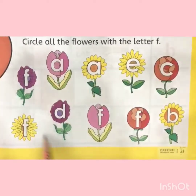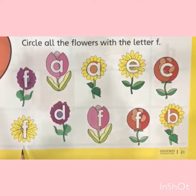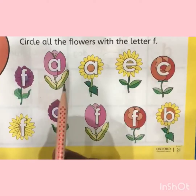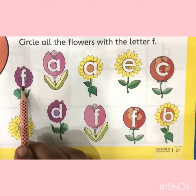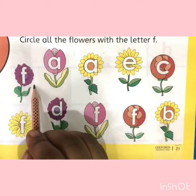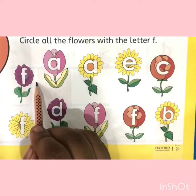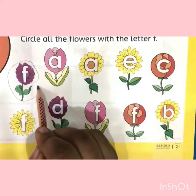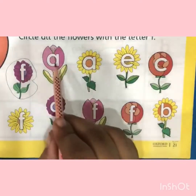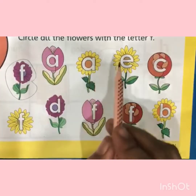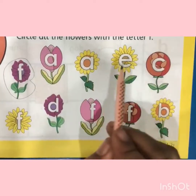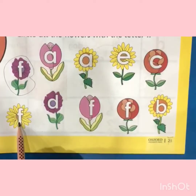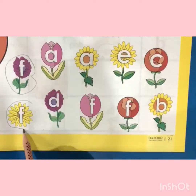Here you can see some different flowers. Dear kids, let us start the activity. This is not the letter F. This is F — well done. Now I will circle this flower like this. Let us try to find out more letter F in these flowers. These are not the letter F. This is F — well done, I got it!